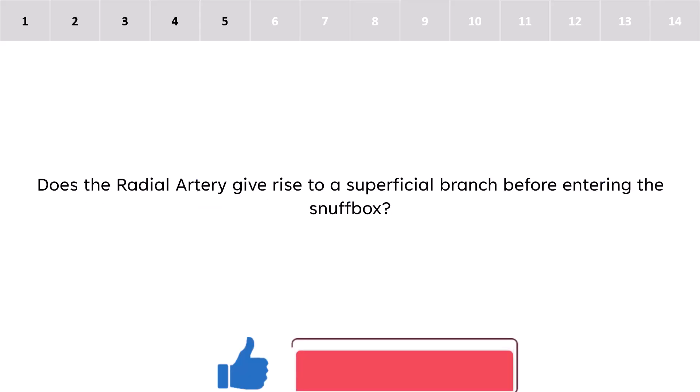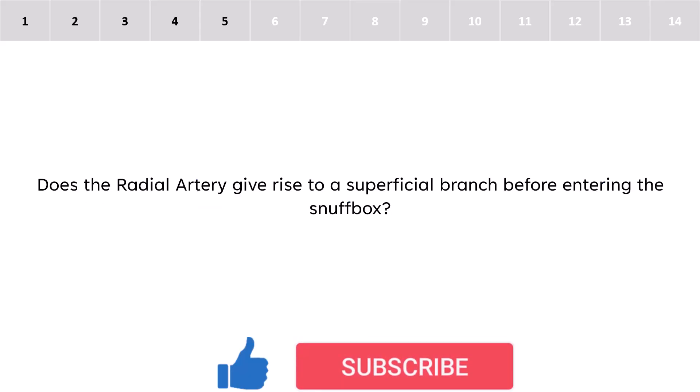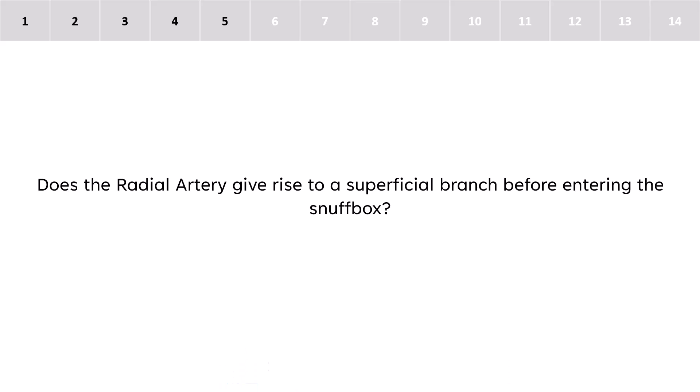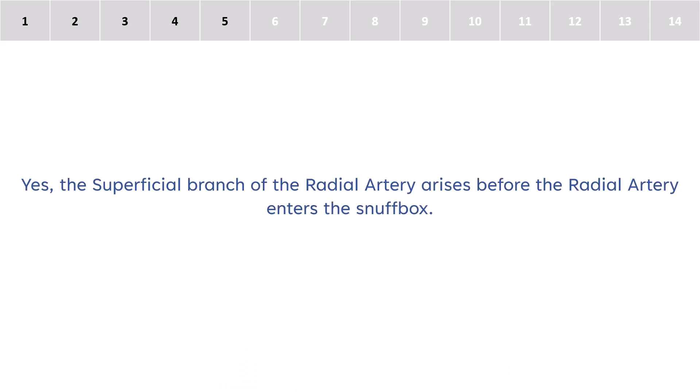Does the radial artery give rise to a superficial branch before entering the snuff box? Yes, the superficial branch of the radial artery arises before the radial artery enters the snuff box.